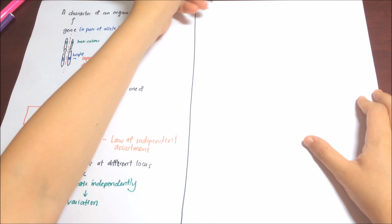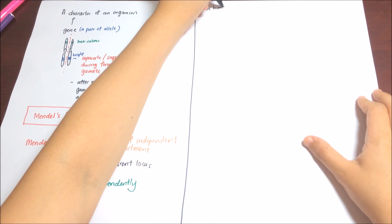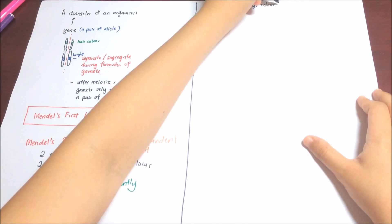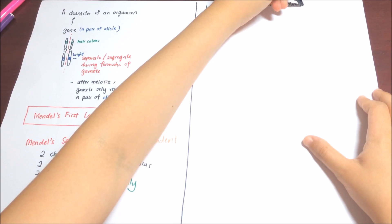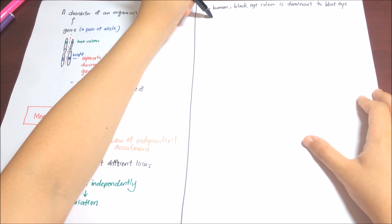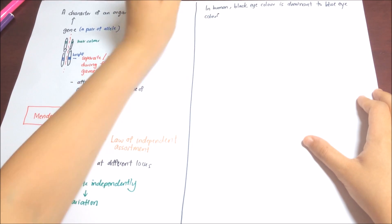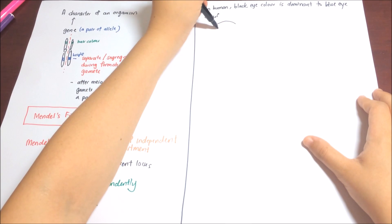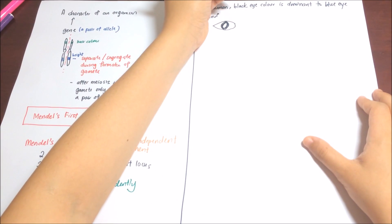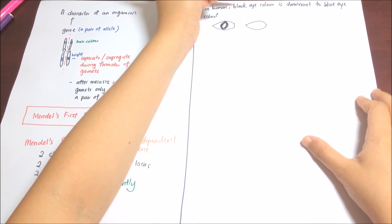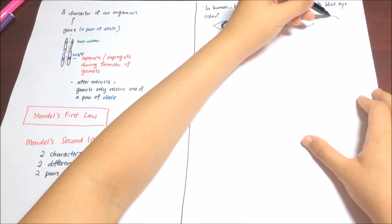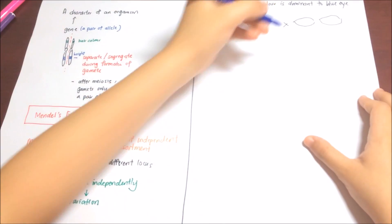Now, let's have a look at one example of how inheritance occur. For example, in humans, black eye color is dominant to blue eye color. So, what happens if a man with black eyes marries a woman with blue eyes?